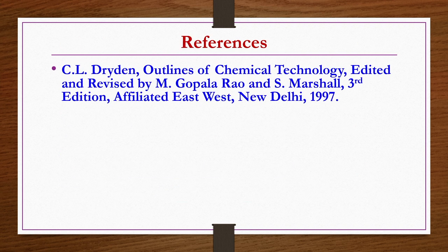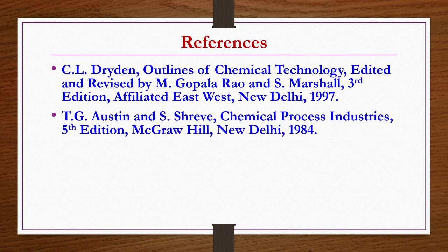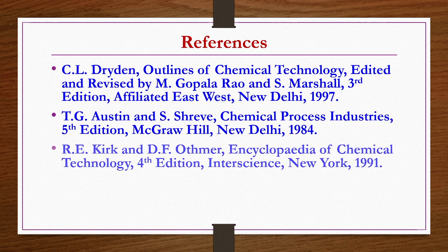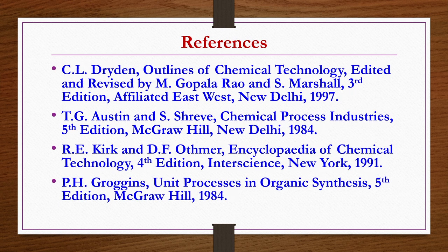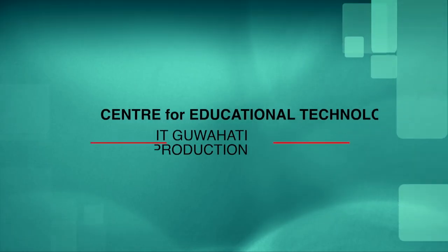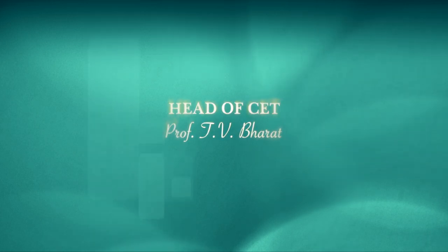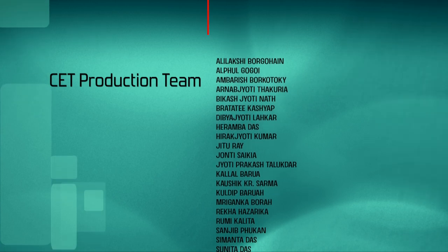References for today's lecture include: Outlines of Chemical Technology by Dryden, edited by Gopal Rao and Marshall, 3rd edition; Chemical Process Industries by Austin and Sriv; Encyclopedia of Chemical Technology by Kirk and Othmer, 4th edition; and Unit Processes in Organic Synthesis by Groggins, 5th edition. With this we complete our Organic Chemical Technology MOOCs course. Thank you so much for your attention and all the best.